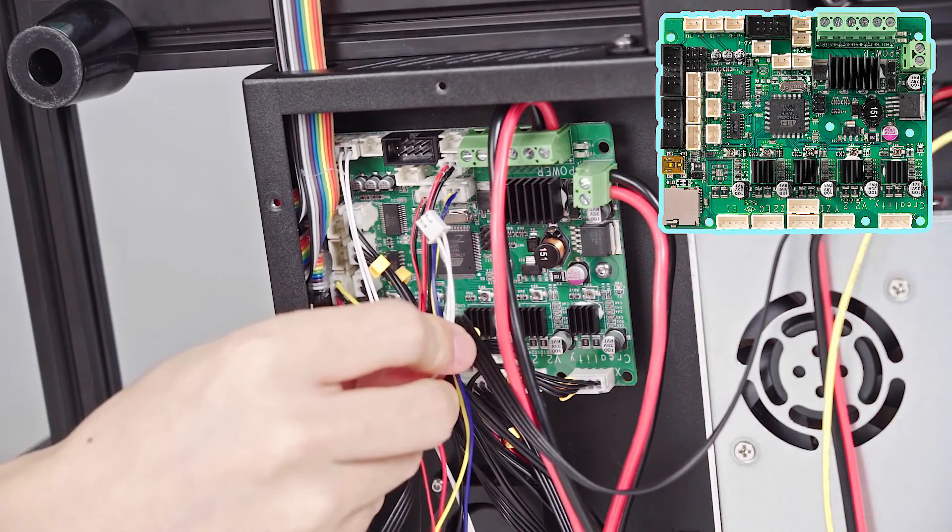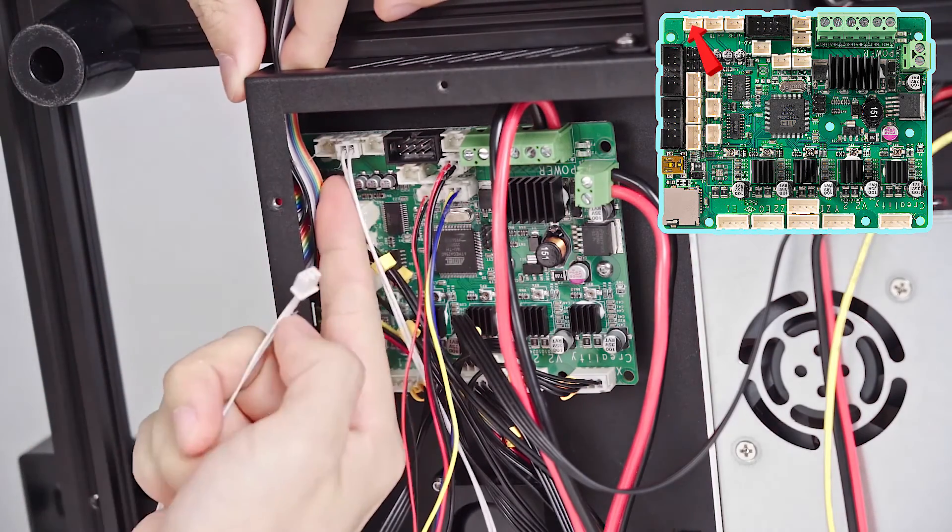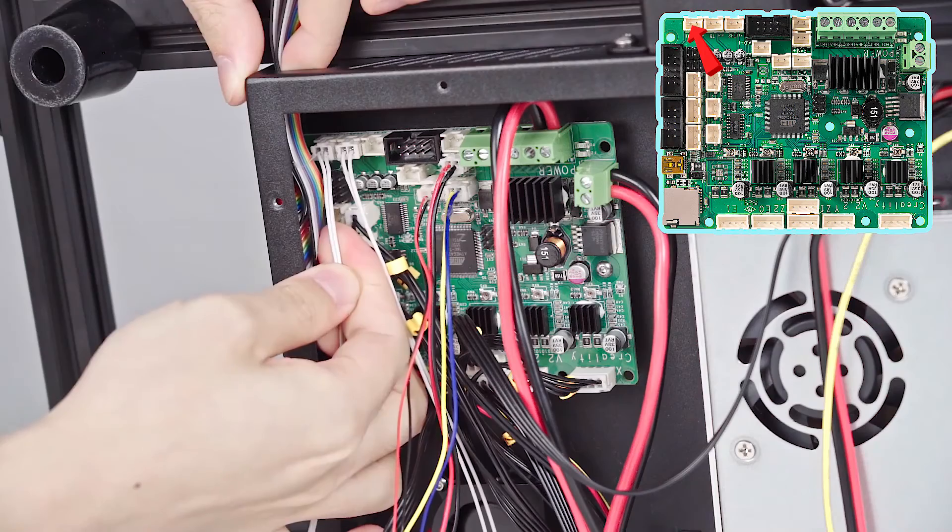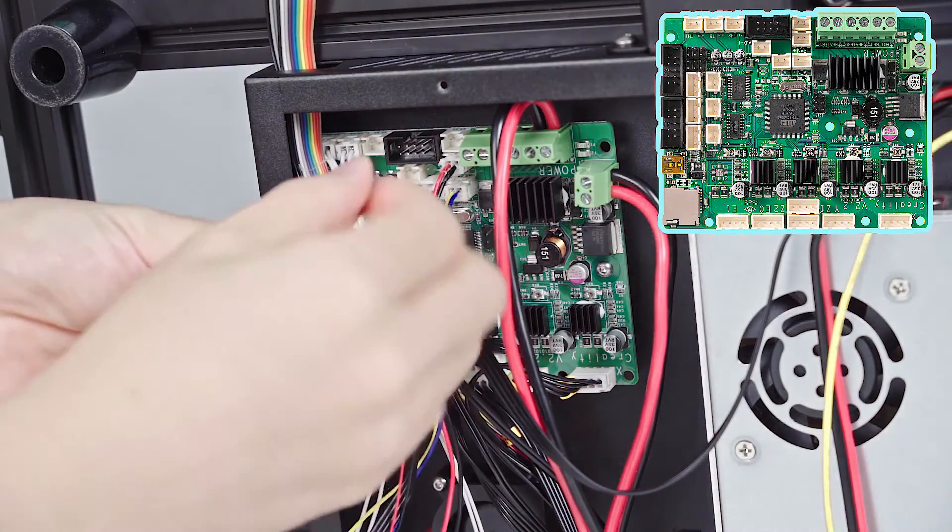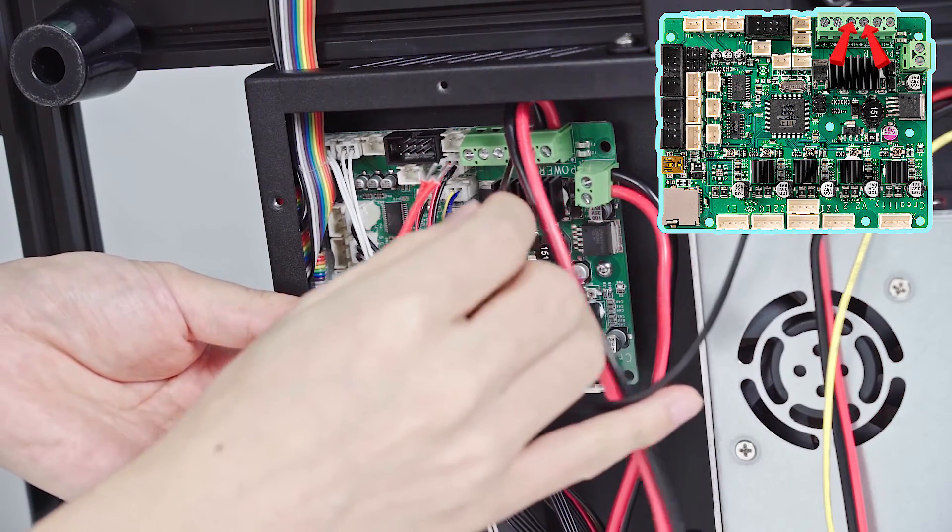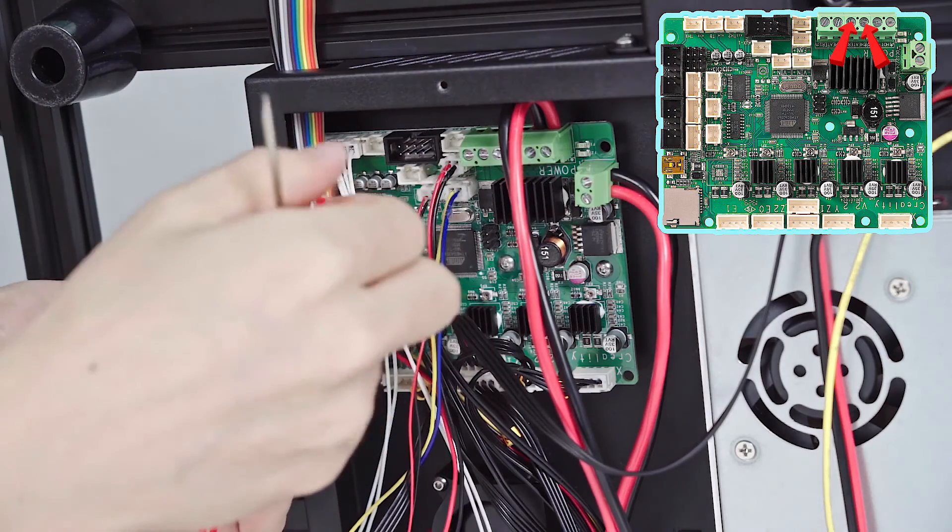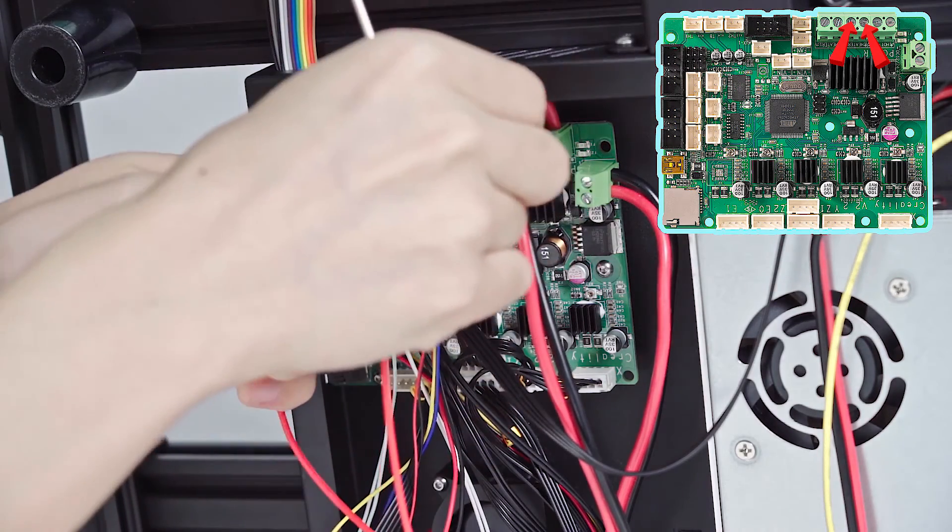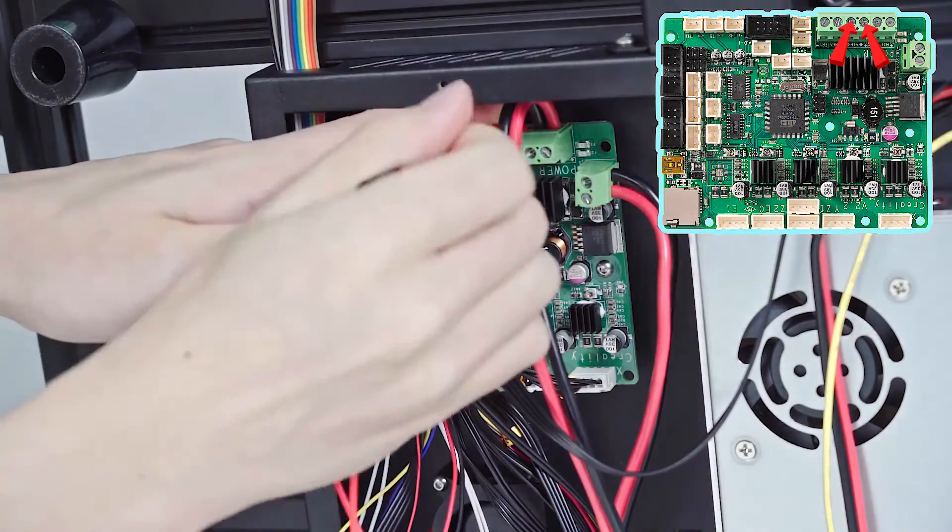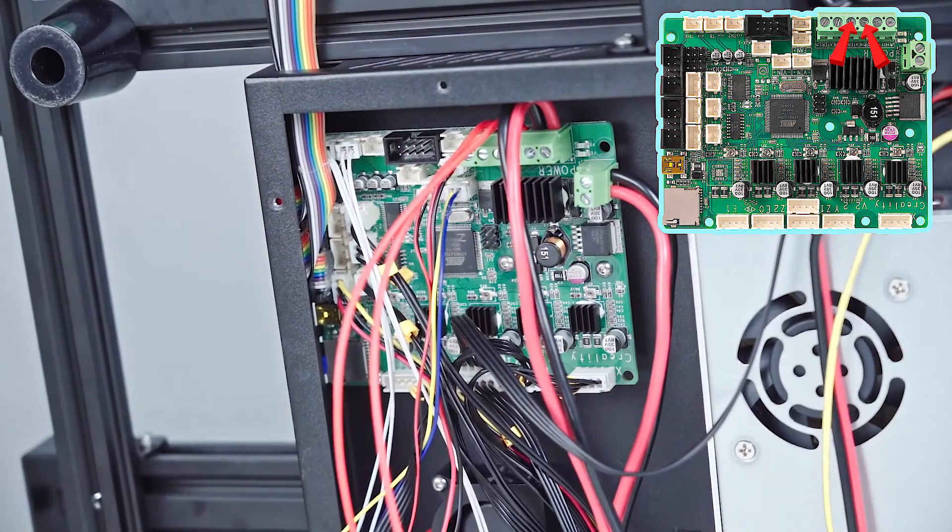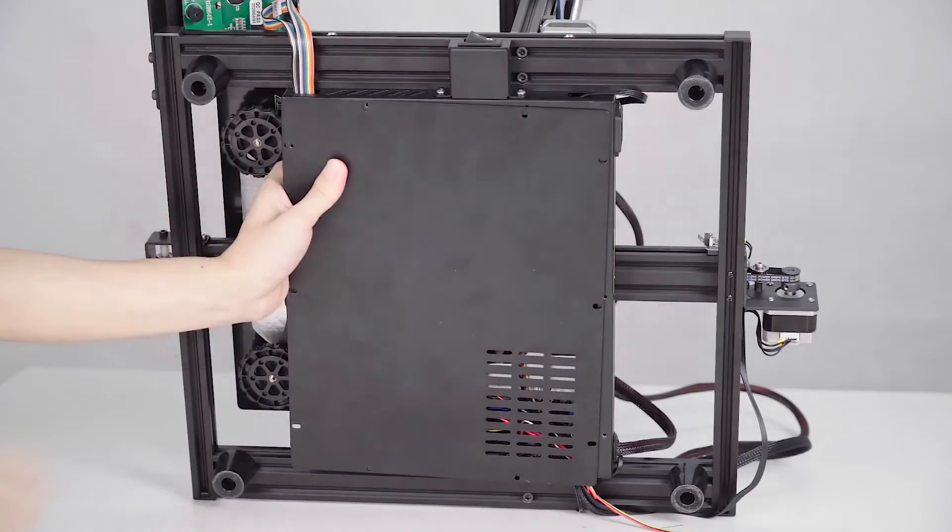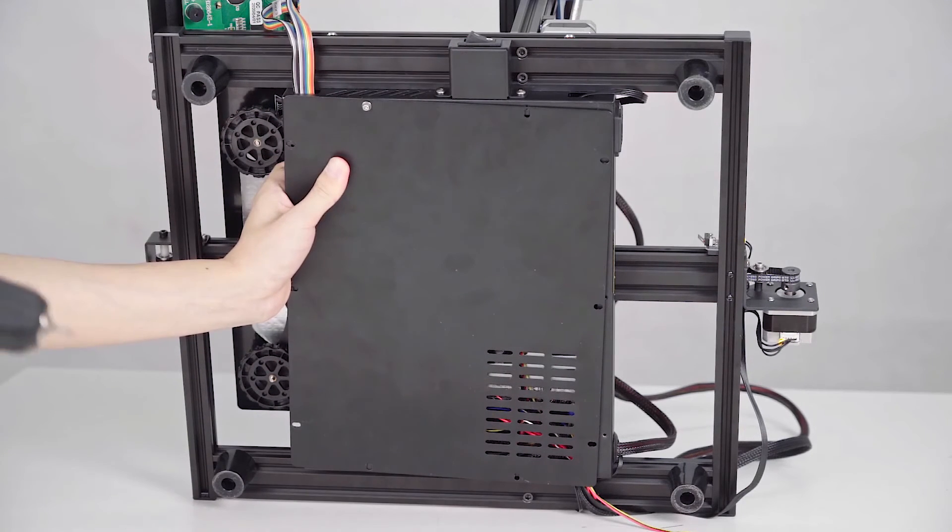Then we're going to connect this cable to the thermistor. And finally, this two red one is going to connect to the port heater. Then the screwdriver will do a little bit of work. Before you cover the lid for the main board, you need to make sure the cable is connected to the right position. Now he's going to tighten the screws.